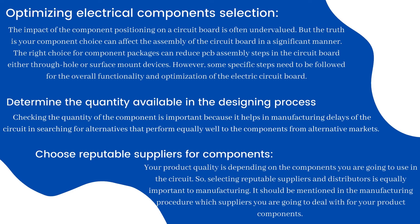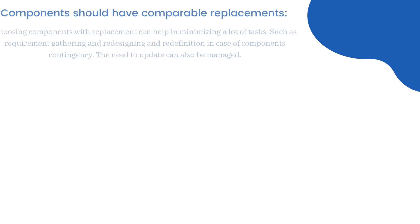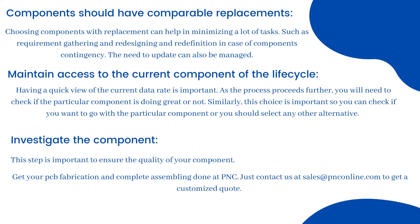Choose reputable suppliers for components. Your product quality depends on the components you use in the circuit, so selecting reputable suppliers and distributors is equally important to manufacturing. It should be mentioned in the manufacturing procedure which suppliers you are going to deal with. Components should have comparable replacements — choosing components with replacements can help minimize requirement gathering, redesigning, and redefinition in case of component contingency. The need to update can also be managed.